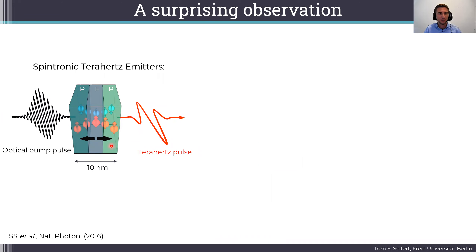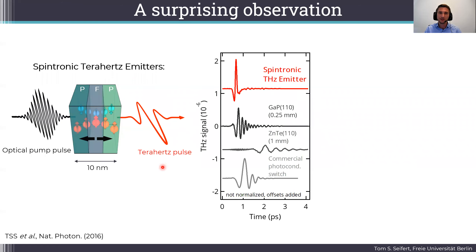Consider the structure shown over here, which is basically a very thin multilayer made out of magnetic and non-magnetic materials. It turns out that if you illuminate the so-called spintronic terahertz emitter on one side with a femtosecond optical pump pulse, you get out a terahertz pulse on the other side. And not only that, the amplitude of that spintronic terahertz emitter is quite large and even larger than standard terahertz emitters that you find in the community.